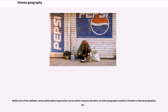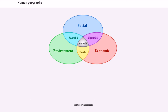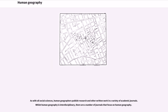Within each of the subfields, various philosophical approaches can be used in research; therefore, an urban geographer could be a feminist or Marxist geographer. As with all social sciences, human geographers publish research and other written work in a variety of academic journals. Whilst human geography is interdisciplinary, there are a number of journals that focus specifically on human geography.